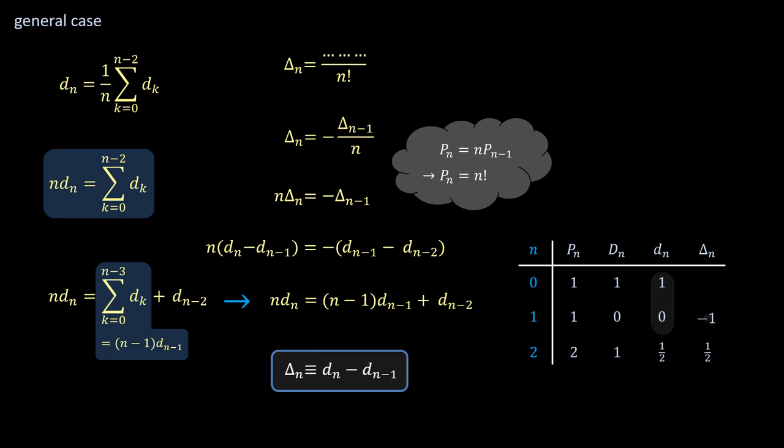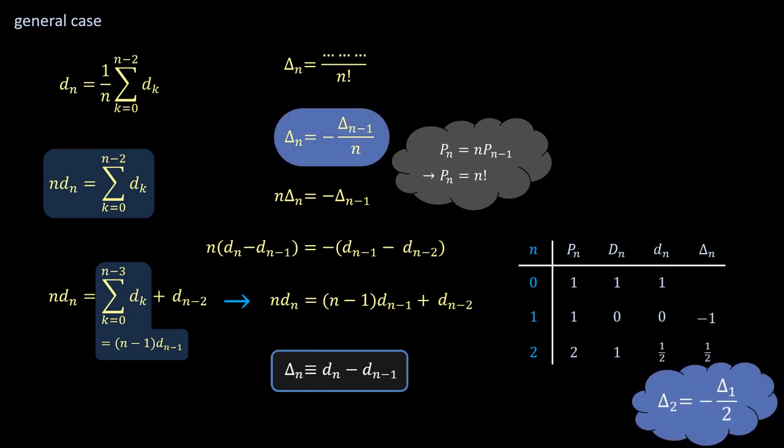that delta_1 equals minus 1. Which, of course, didn't really require the extra row, but it's always nice to reinforce the overall consistency.